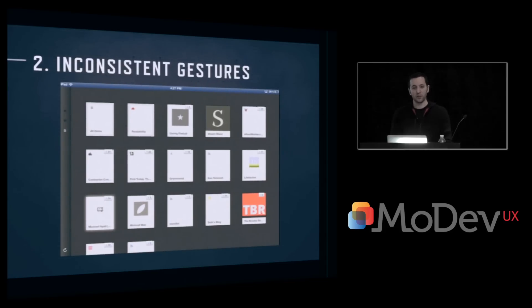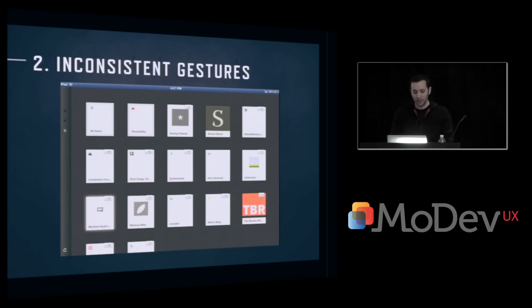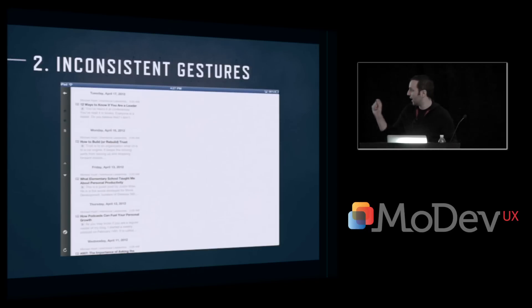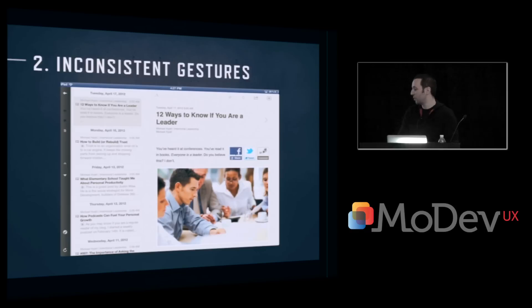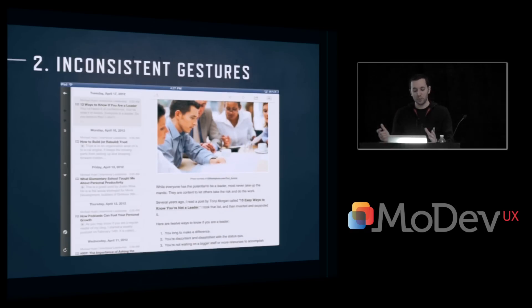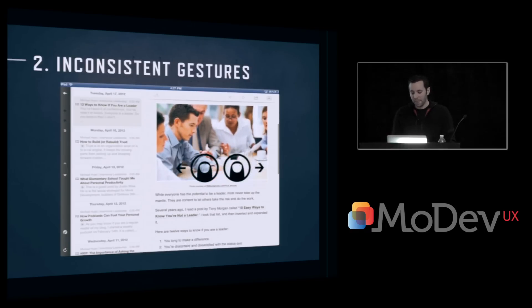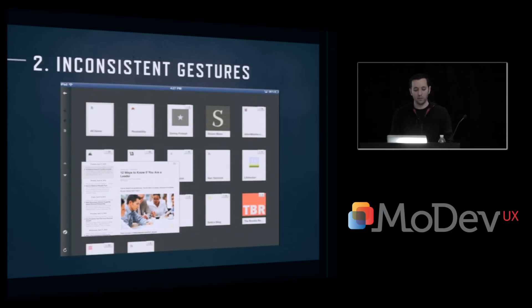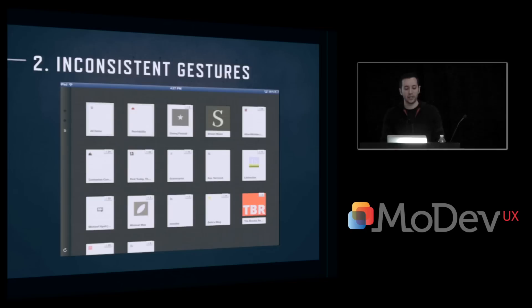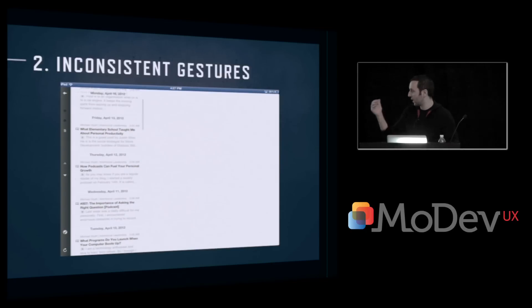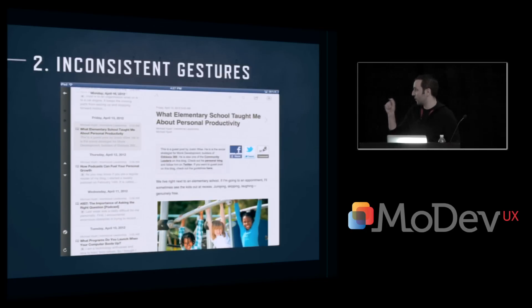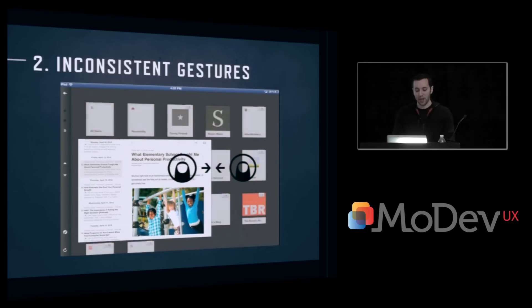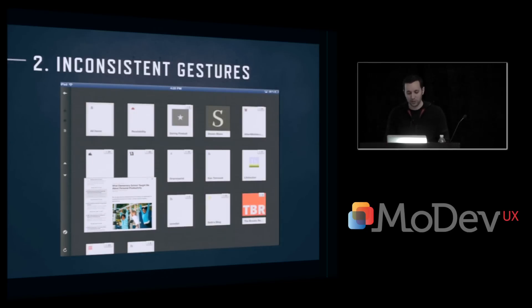Inconsistent gestures are another thing to be aware of, especially on the iPad — larger screen lets you do more gestures. In this particular application, we tap in, go into a specific article, and do a pinch out to do what's called readability mode, a kind of focus mode. Then all of a sudden to get out of that mode, we pop back up into the top level. So the gestures are completely inconsistent in this example. We go in, pinch out, pinch back, and we're back up on top. We have to make sure we keep gestures consistent.